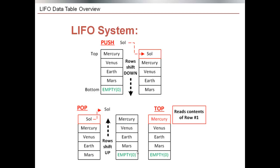Next is the LIFO system. The LIFO system stands for last in first out, where new information is written to the front of the data table using the push function. All of the rows then shift down by one. In the LIFO system we have a table with information in the top four rows and the bottom row is empty. When the push operation is performed with the word Sol, it is written to the top row of the table and all the other rows shift down. The pop function removes the front row from the table and the remaining rows shift up. With a full table, the pop operation removes the topmost row and all other rows shift upwards.